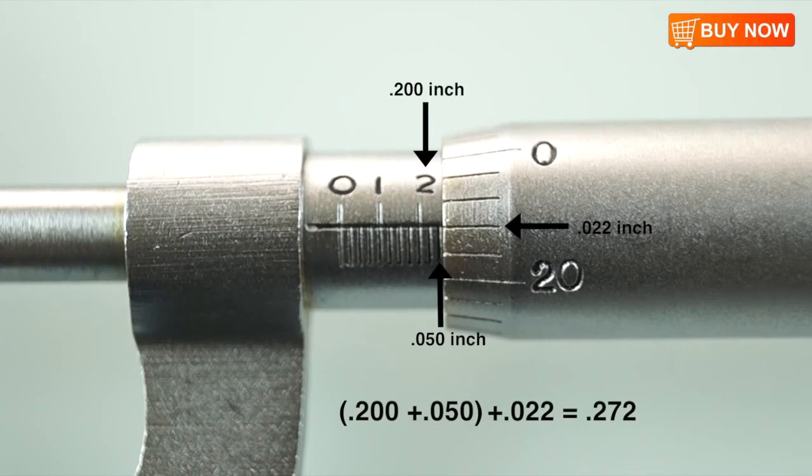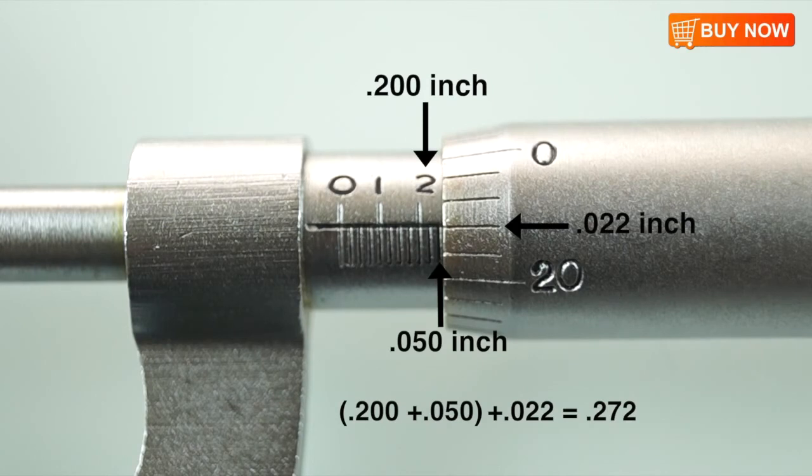Remember, to measure any object simply add the barrel measurement to the thimble reading and you will have yourself an accurate measurement. It's that easy.